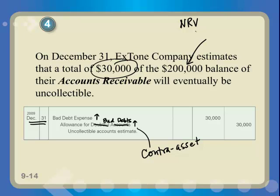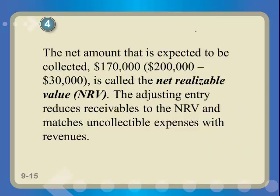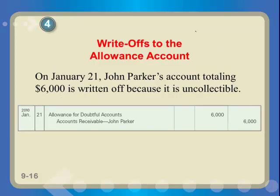On annual reports it may say 'net accounts receivable,' which just means what's owed minus what you probably aren't going to get. The net amount expected to be collected is $170,000 — that's the NRV, net realizable value — and it goes on the balance sheet. We booked the $30,000 bad debt expense for that period, and that came out of net income for that period.